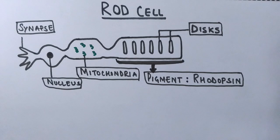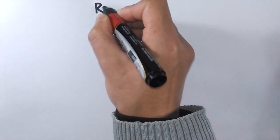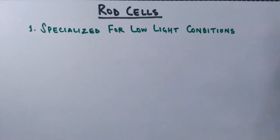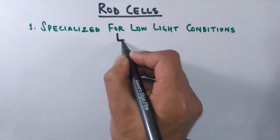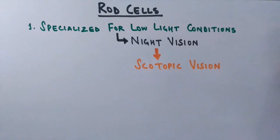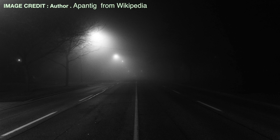Now let's look at the functioning of rod cells — what these rod cells do in the retina. These cells are specialized for low light conditions, meaning they are used during night vision, or when there are dim light conditions. The vision which these rod cells give us is called scotopic vision — that is the vision our eyes perceive during dim light conditions. As you can see in this picture, the whole image appears in black and white under low light — it is the rod cells which give us this vision without colors.